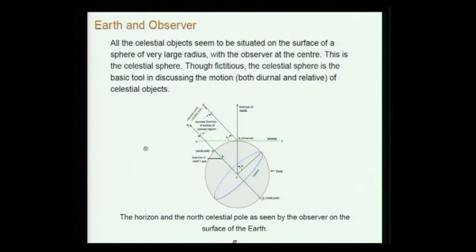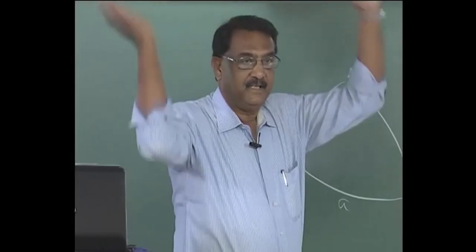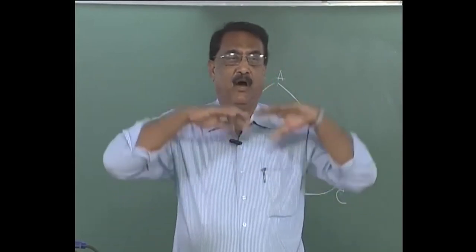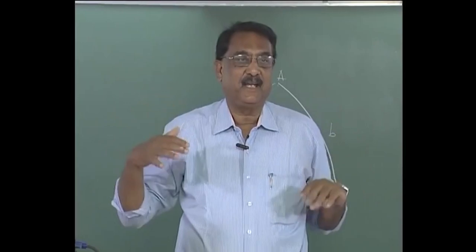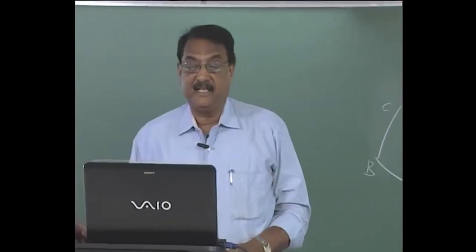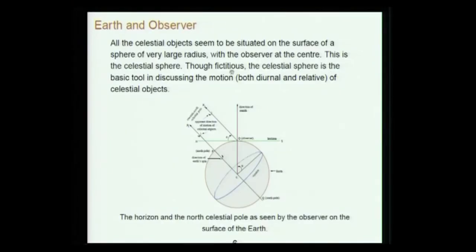How does one particular individual view the celestial sphere? That is important because there is an observer situated on the earth. All the celestial objects seem to be situated on the surface of a sphere of very large radius with the observer at the center. When you observe the sky, we see the sun, moon, planets, and stars all moving on a large hemisphere. Though fictitious, the celestial sphere is the basic tool in discussing both the diurnal and relative motion of celestial objects.